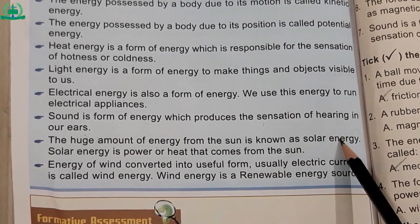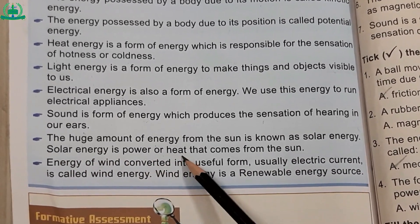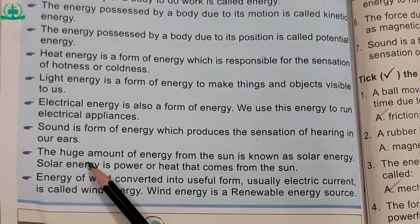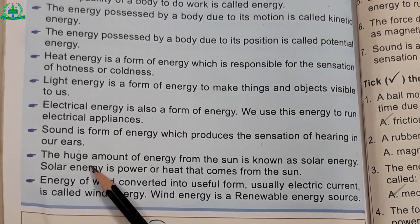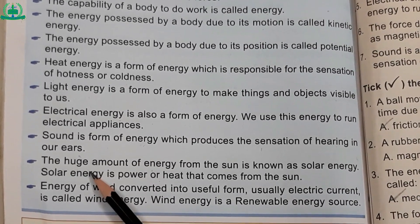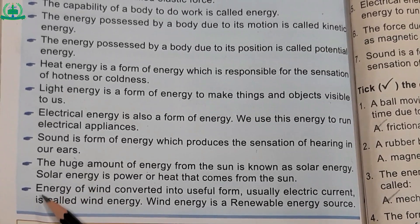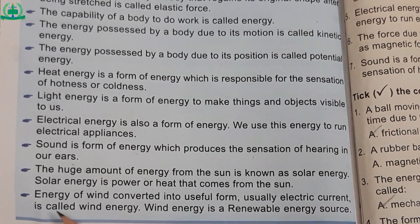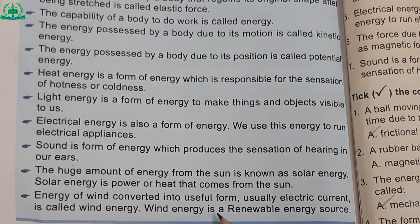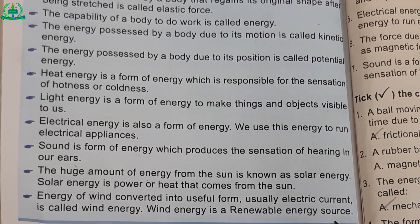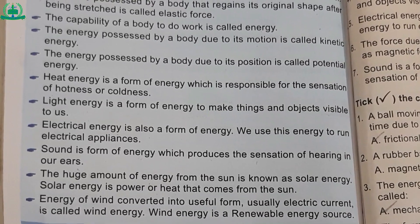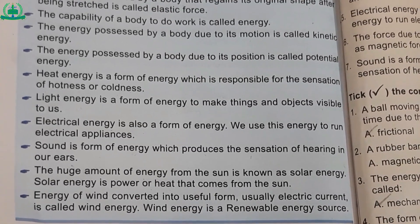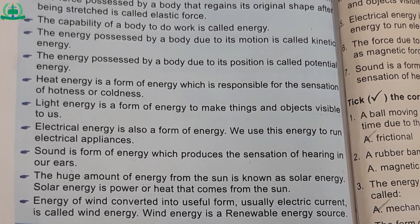Number fifteen — the huge amount of energy from the Sun is known as solar energy; solar energy is power or heat that comes from the Sun. (Energy ki ek badi miqdar jo suraj se hasil hoti hai use solar energy kehte hain.) Number sixteen — energy of wind converted into a useful form, usually electric current, is called wind energy. Wind energy is a renewable energy source.